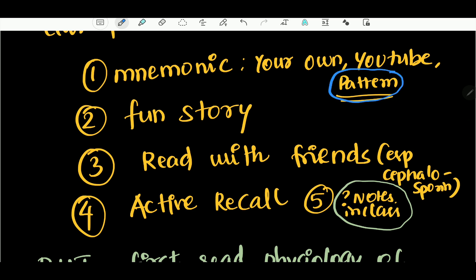You can absorb the pattern. For example, ACE inhibitors: Captopril, Enalapril, Lisinopril — pril, pril, pril. Angiotensin receptor blockers end in '-sartan': Losartan, Valsartan, Telmisartan. You can see the pattern clearly.